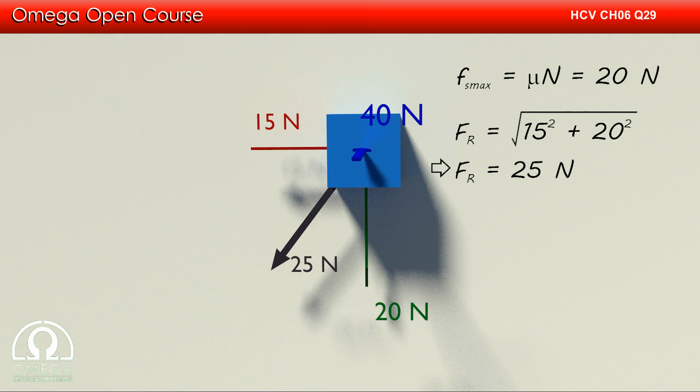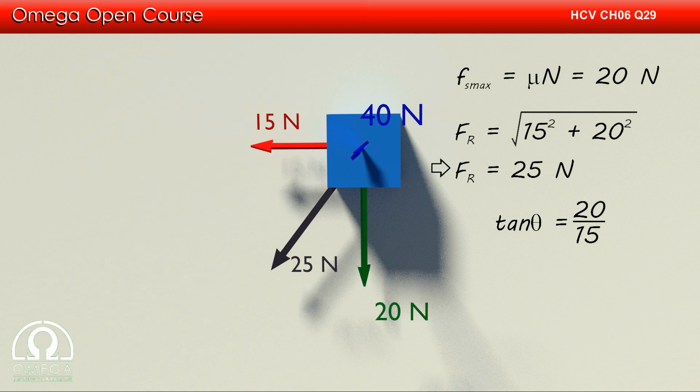Also, from simple trigonometry, we know that the direction of the resultant of these two forces is tan inverse 4 by 3, that is 53 degrees with the horizontal.